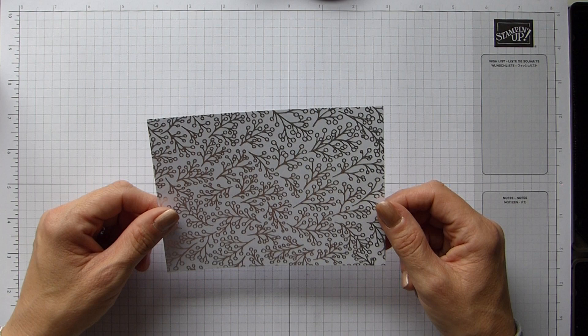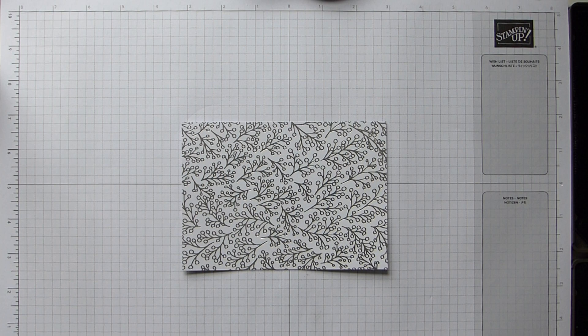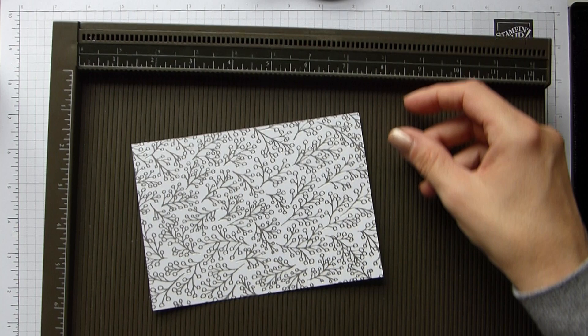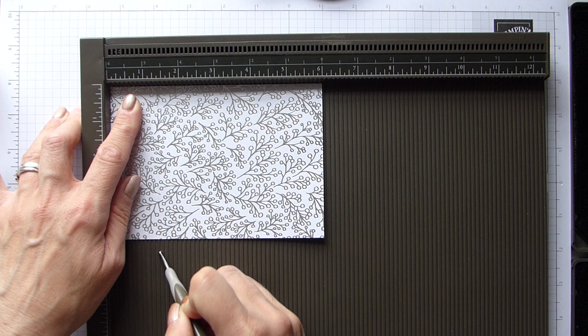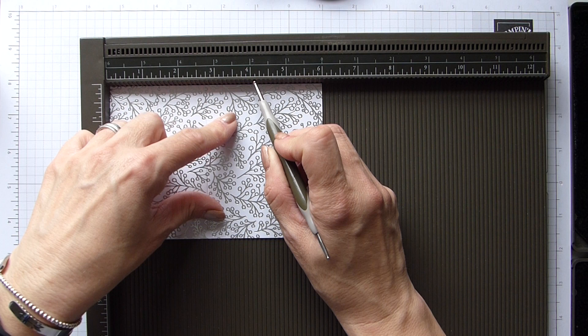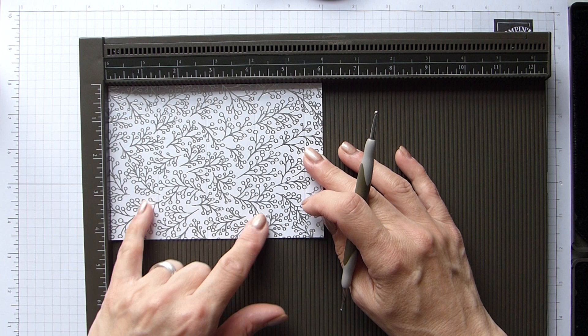So to start off with, you will need a sheet of DSP that is 6x4.25, or in centimeters that will be 15.5x11. And then you will need on your long side to score at 1.3.25, 2.75, 4.1.8, and 5.5, and in centimeters that will be 3.5, 7, 10.5, and 14.